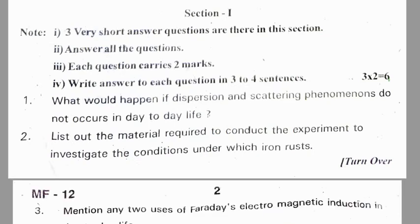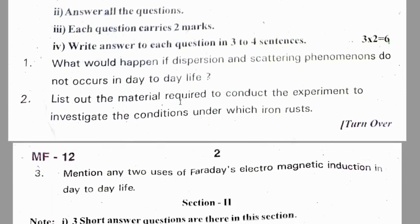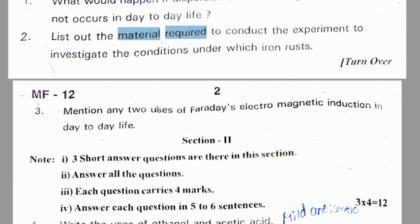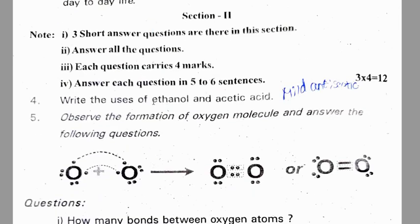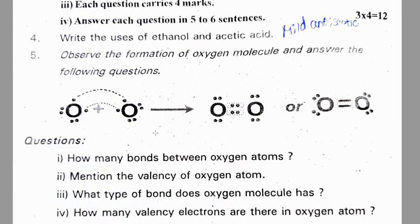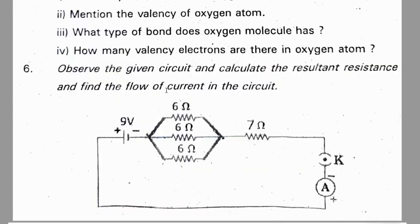Medchal district pre-final 2: What would happen if dispersion and scattering phenomena do not occur in day-to-day life? List out the materials required to conduct the experiment to investigate the conditions under which iron rusts. Mention two uses of Faraday's electromagnetic induction in day-to-day life. Section 2: write the uses of ethanol and acetic acid. Observe the formation of an oxygen molecule and answer the following questions. Observe the given circuit and calculate the resultant resistance and find the flow of current — you need to add parallel and series connections.